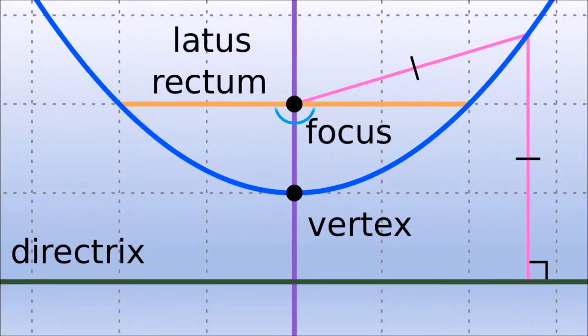Next is the focus, a fixed point lying at the axis of symmetry from which the distance of a point on parabolic curve is equal to the distance of same point from a fixed line.